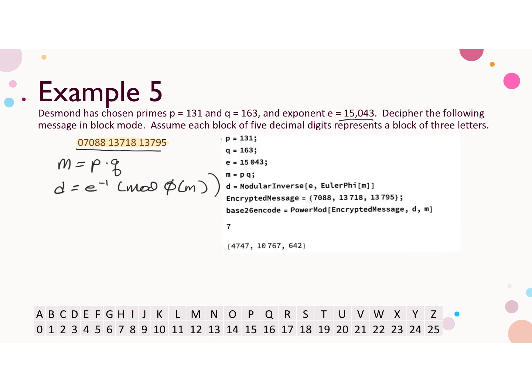Here's the Mathematica code we need for this problem. I've entered the values of p, q, e, and m. Then we calculate d, the modular inverse of e mod phi of m and the command in Mathematica for the phi function is Euler phi.